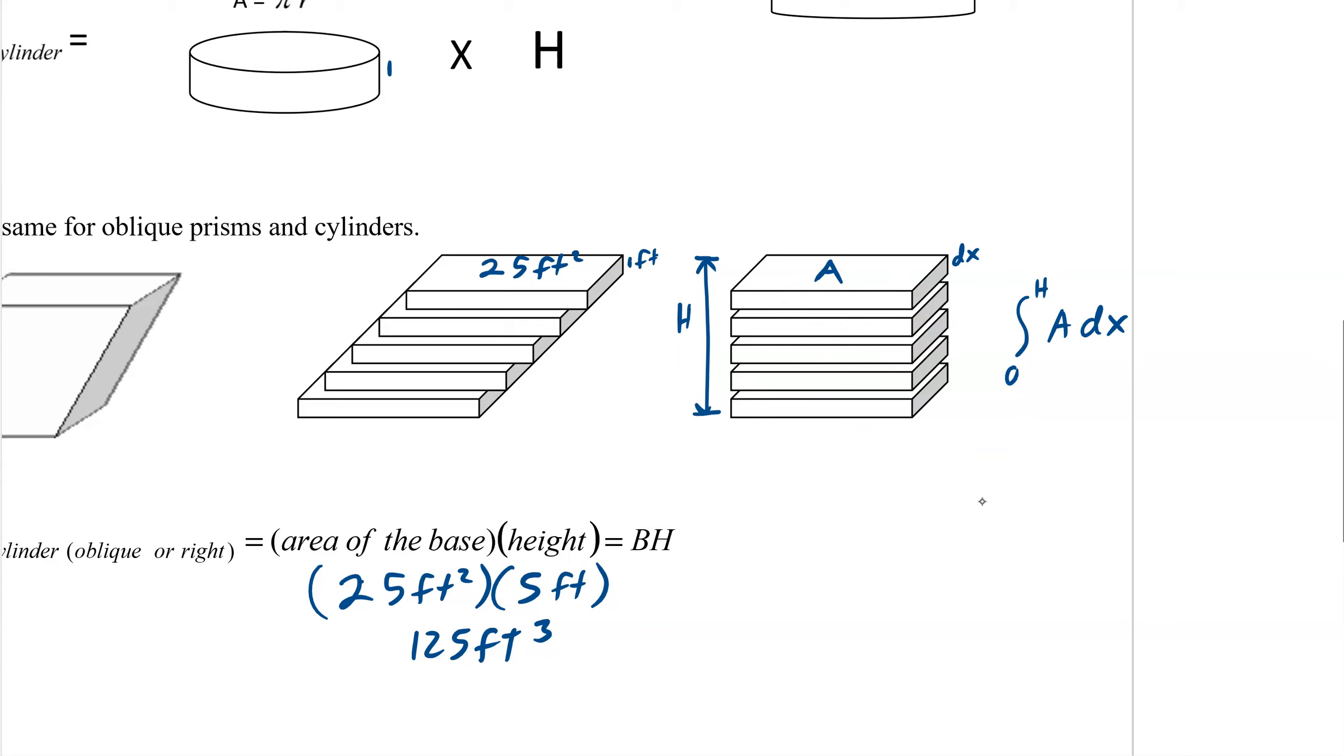And there's our integral. And if we actually do solve this, a is a constant, we evaluate it. We end up with this, which would then become a h minus a times 0, which is a h. And so there it is. There's our volume, just like before. Over here, we're using b for area of the base, but that's all our a represents. It's the area of the base. Same exact formula.